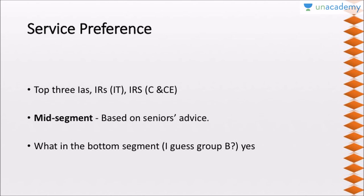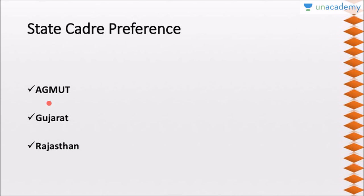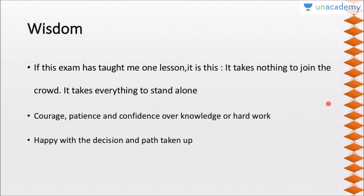My service preferences were IAS, IRS IT, and IRS CNC in the top segment, based on seniors' advice. My state cadre preferences are Agmet, Gujarat, and Rajasthan. Even though I am a resident of Varanasi in UP and am an outsider for this cadre, I chose it because I went to college in Delhi and I am really in love with that city. If this exam has taught me one lesson, it is this: it really takes nothing to join the crowd, and it takes everything to stand alone.